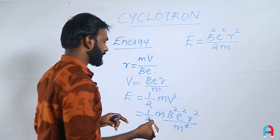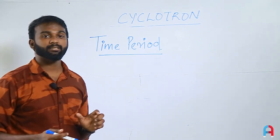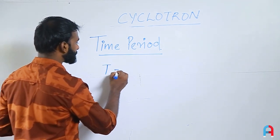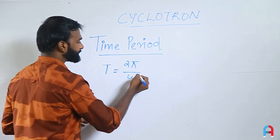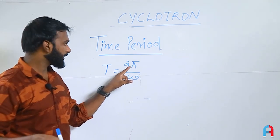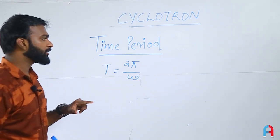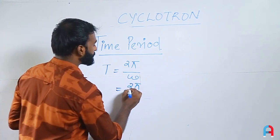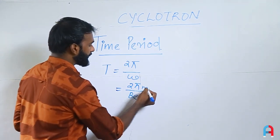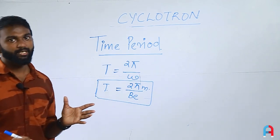To calculate the time period: the general equation is T = 2π/ω. Since ω = BQ/m, substituting gives T = 2πm/(BQ). This is the expression for the time period of the particle. Importantly, the time period is independent of the velocity and radius — it depends only on mass, charge, and magnetic flux density.